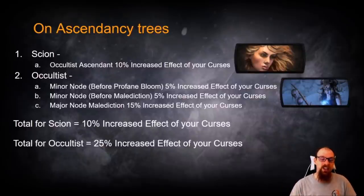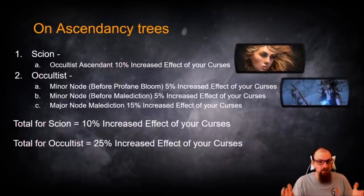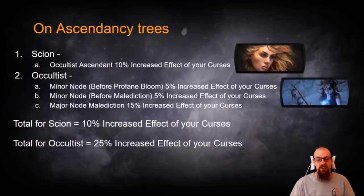This means when you're choosing your Ascendancy, if you just want the maximum increased effect of your curses, and you're looking at nothing else, then obviously the Scion is worse than the Occultist, because there's a 15% difference here in terms of the increased effect of your curses.